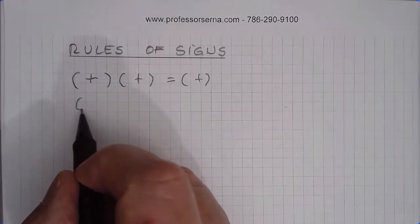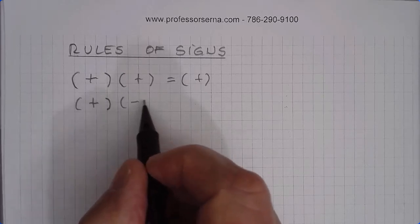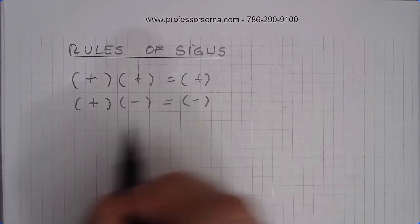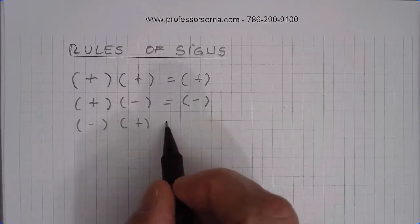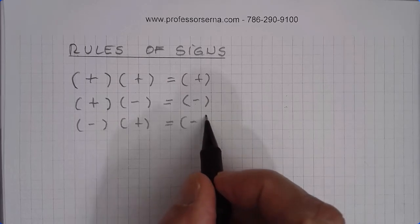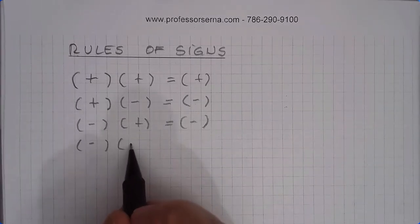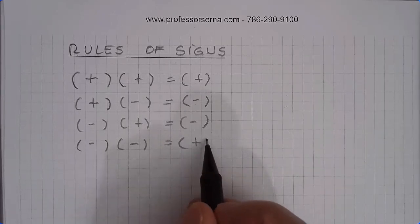If you multiply a positive expression times a negative expression, what you get is a negative expression. Negative times positive is also going to give you negative. And if you multiply something negative by something else negative, the final result is going to be positive.